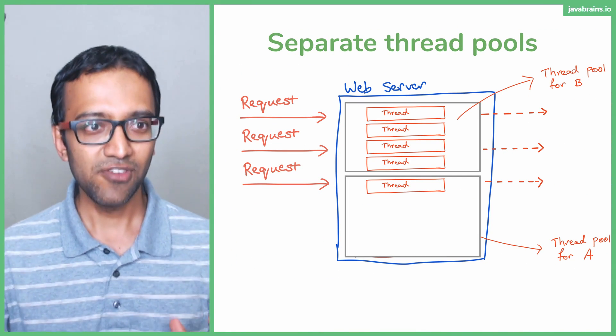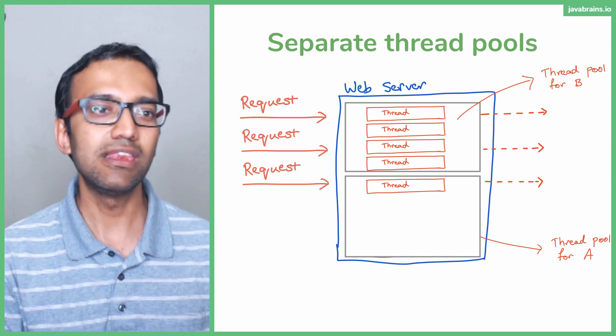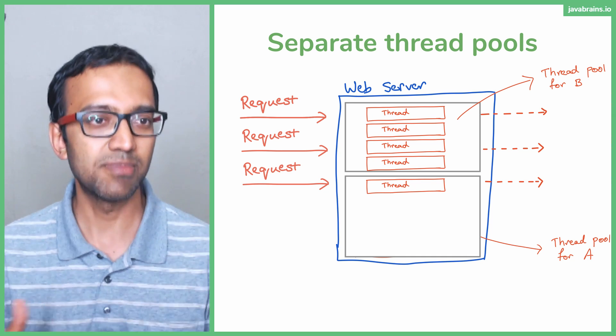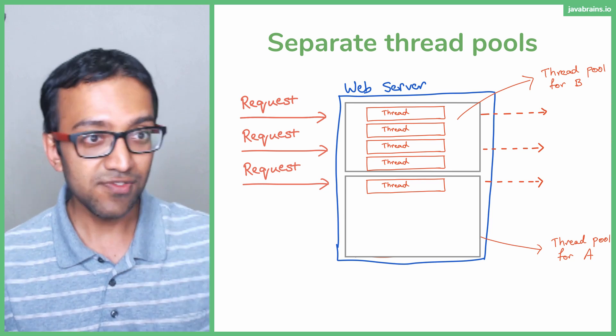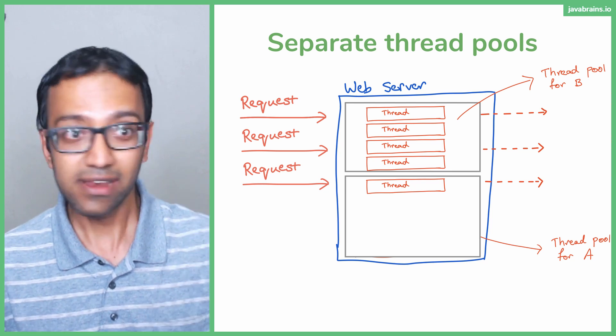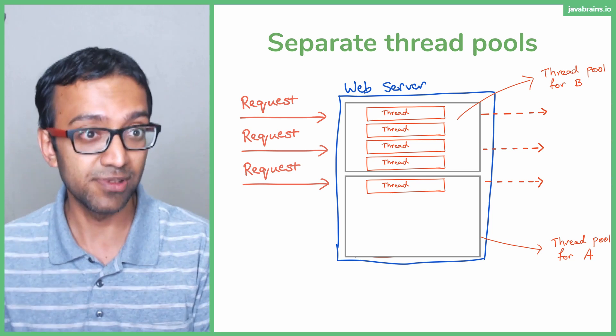See what I'm saying? What if you had separate thread pools for A, separate thread pools for B? Separate limits for max threads for A, separate limits for max threads for B? Even if you weren't doing any of the circuit breaker stuff that we talked about, let's say you do none of that stuff, you just do this bulkhead thing. You create separate thread pool resources.